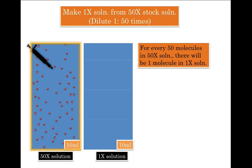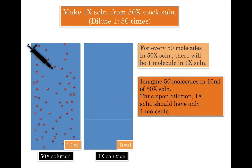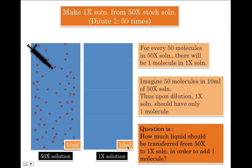Now let's imagine that there are only 50 molecules in 10 ml of 50X solution. Thus upon dilution, 1X solution should have only one molecule. So the question is how much liquid should be transferred from 50X solution to 1X solution in order to add one molecule.